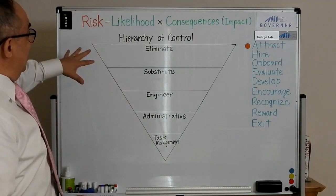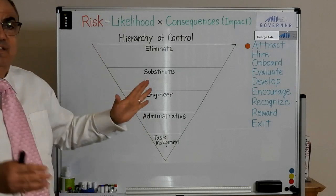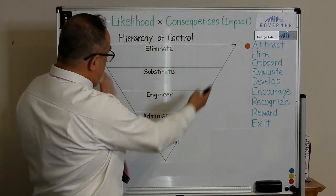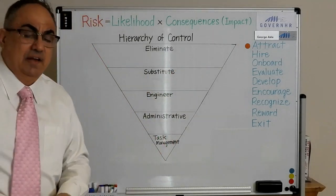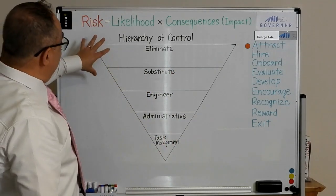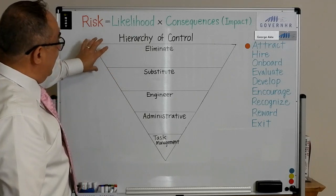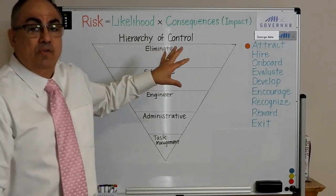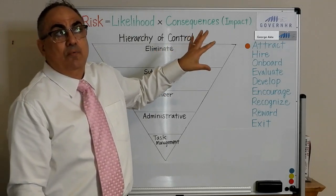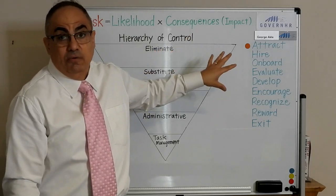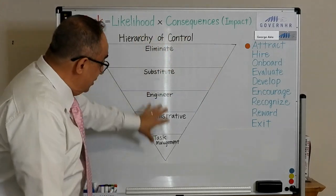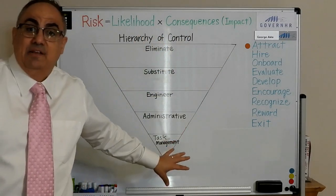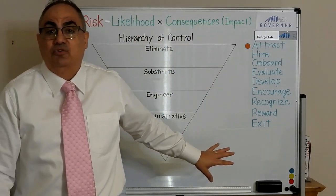As you can see, this is a pyramid upside down here. We go from the top, where we have the most robust controls, right through to the least robust controls.